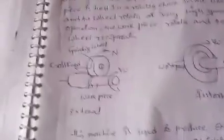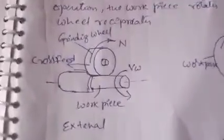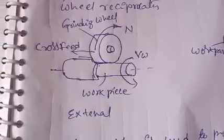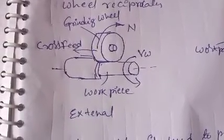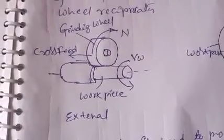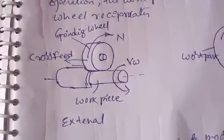Today I will explain the cylindrical grinding machine. Cylindrical grinding machines are of two types: the first one is the external cylindrical grinding machine and the second one is the internal cylindrical grinding machine.